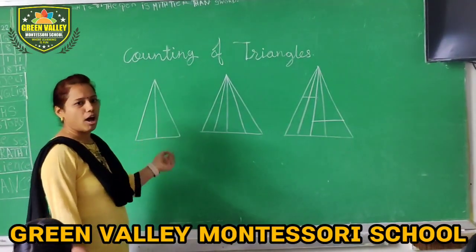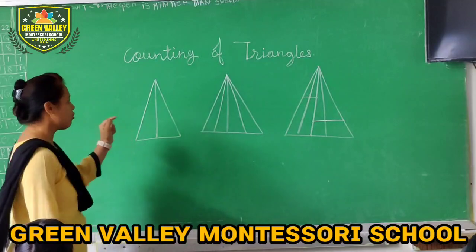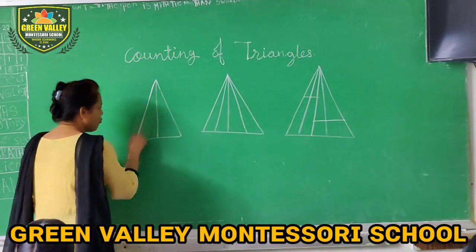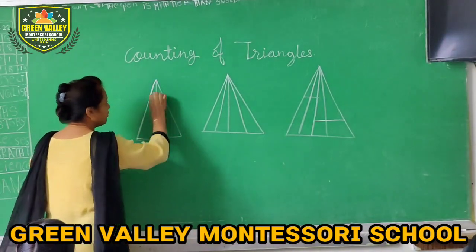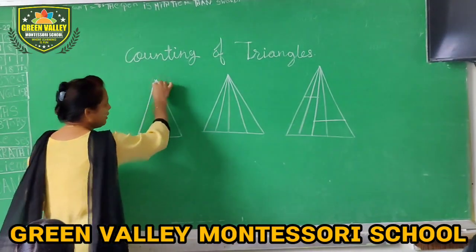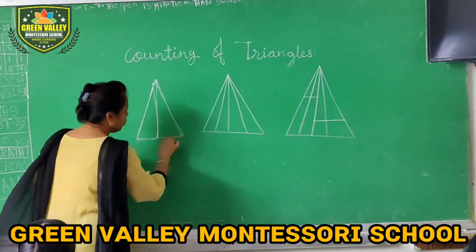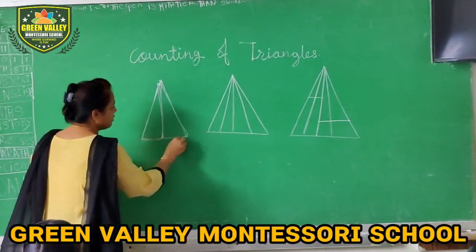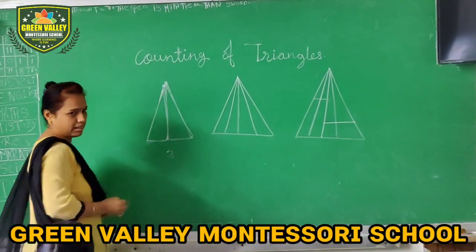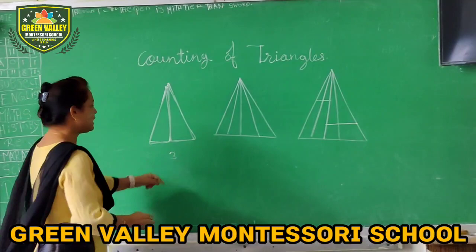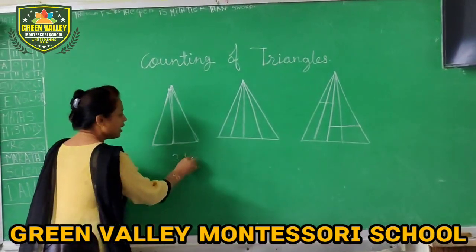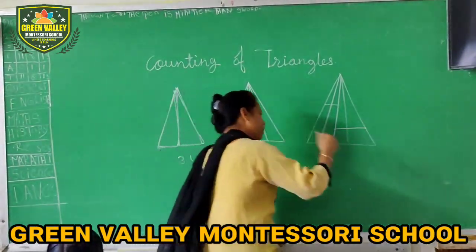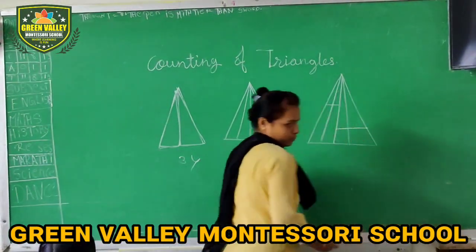Suppose this figure. What do you do? You count this. Suppose this is 1, then 2, and this is 3. You take 3. But we don't have to do this. So, we have a trick to use.